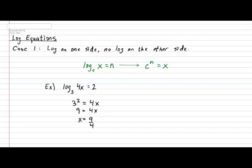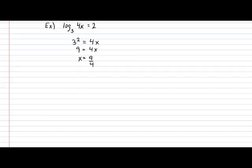Simplifying, we get that 9 is equal to 4x and therefore x is equal to 9 over 4. See how easy it was to solve a case 1 type of log equation? For our next example, let's solve for x in the following: log of base 2 of x minus 5 all over 4, equal to 4.